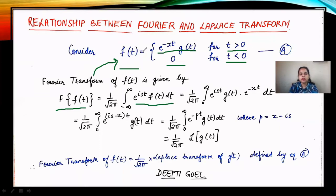We have defined our function f(t) to be e to the power minus xt times g(t) for t greater than 0, and 0 for t less than 0. If we break our integral into two parts — from minus infinity to 0 and from 0 to infinity — for minus infinity to 0 the function has a value of 0, so the limits are just left with 0 to infinity.